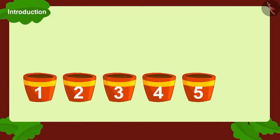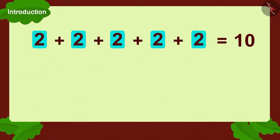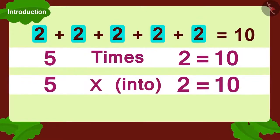Each pot has two seeds and there are five such pots. We can write it as five times two, or we can also write it as five multiplied with two.